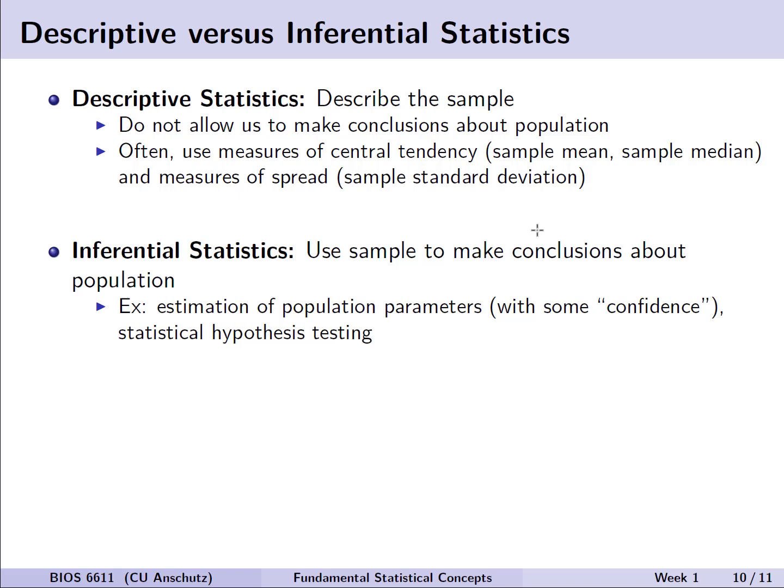On the other hand, a lot of times what we're trying to do when we take these samples and draw some conclusion is inferential statistics. We use the sample here to make conclusions about a population. So for example, we're estimating the population parameters maybe with some level of confidence for a confidence interval calculation for uncertainty, and we use that then for statistical hypothesis testing. For example, is the sample mean height of woman in America equal to 5 foot 8 inches or is it something else?